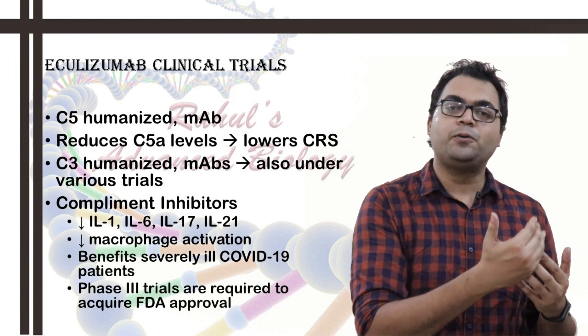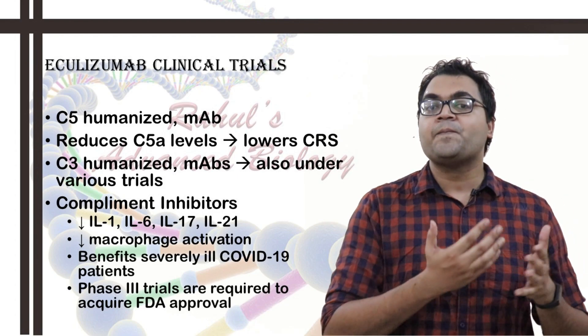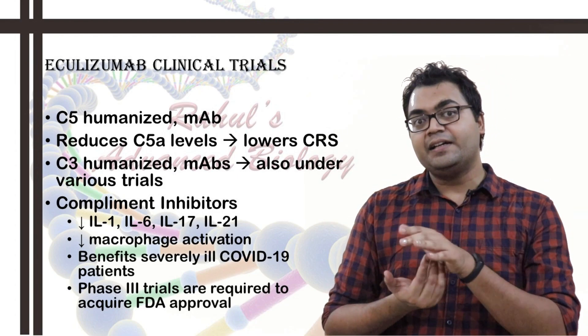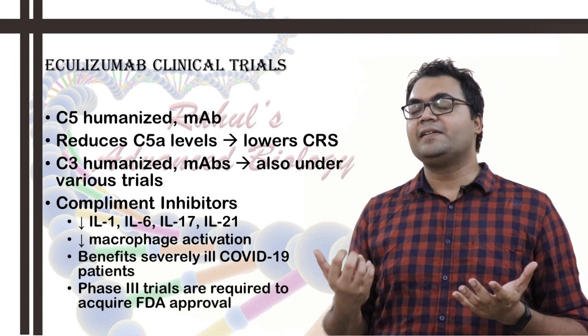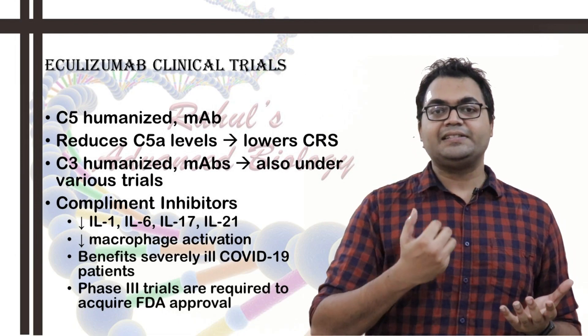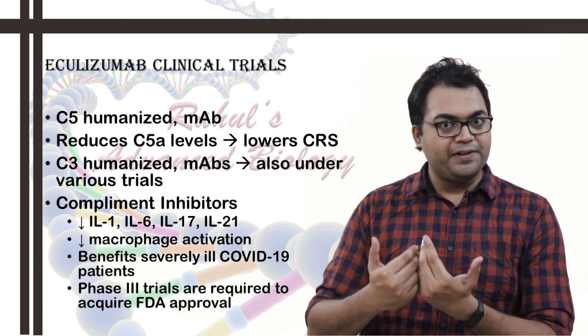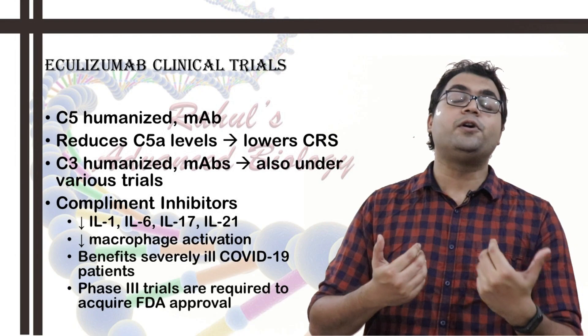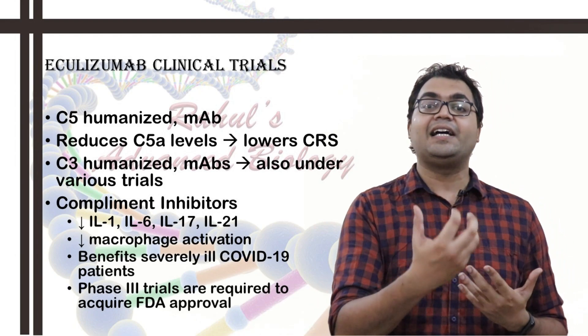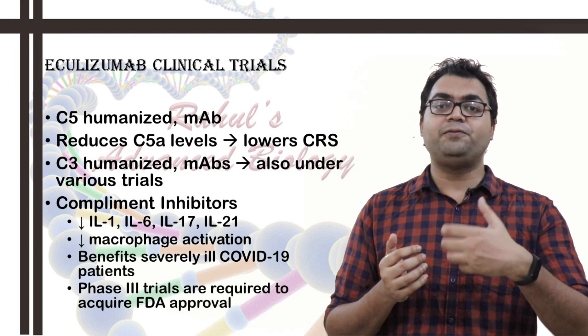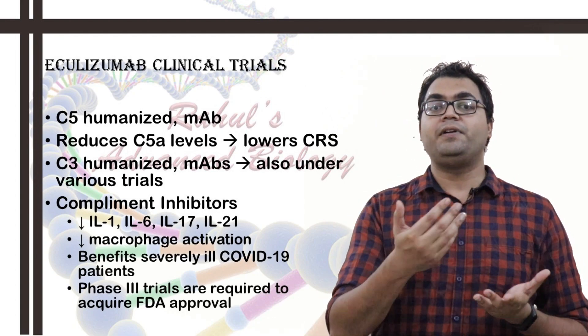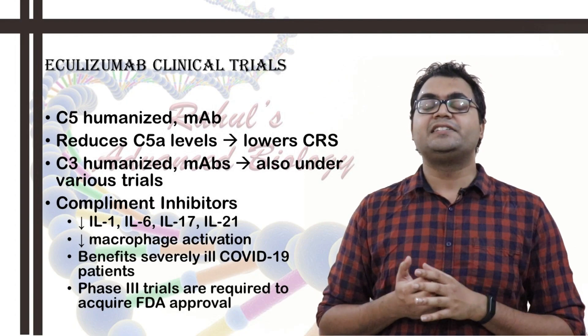And, C5a then cannot bind to C5a receptor, the GPCR present on various leukocytes, especially neutrophils. And then, neutrophils cannot be targeted to the inflammatory sites and then cannot degranulate and cannot cause the release of various cytokines, along with the recruitment of macrophages monocytes, which will also release the pro-inflammatory cytokines, like IL-1, IL-6, IL-8, TNF-alpha, IL-17, IL-21, etc., which leads to the further ramifications in the form of acute respiratory distress syndrome.